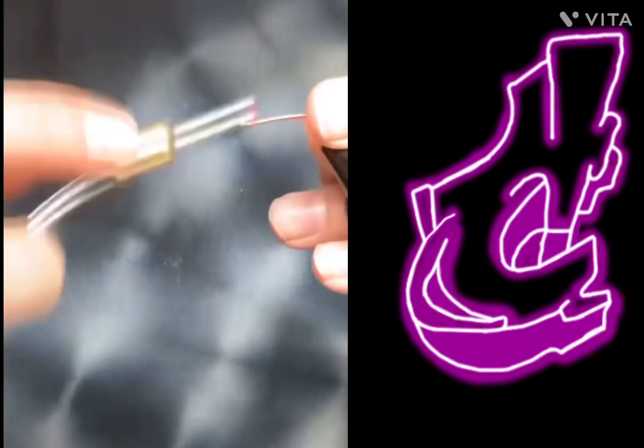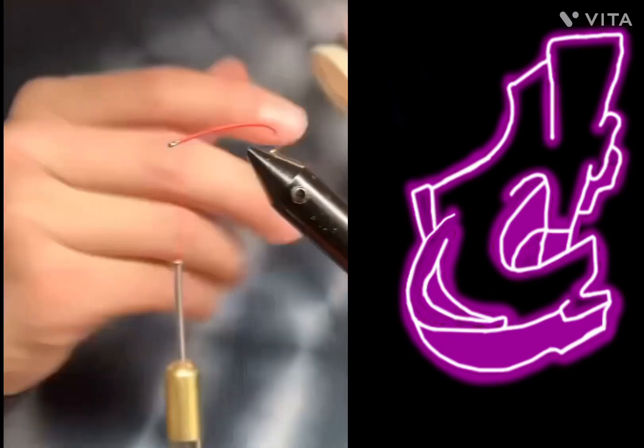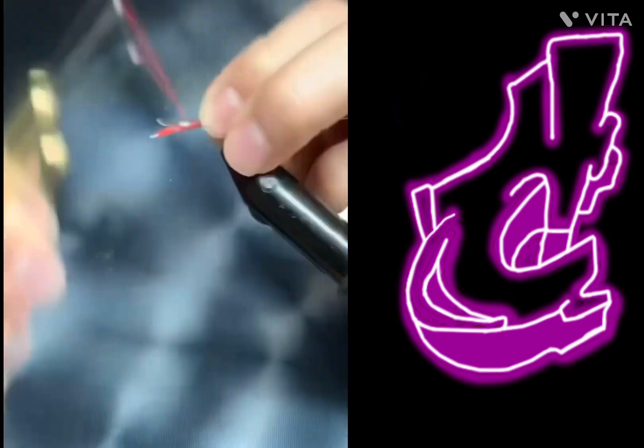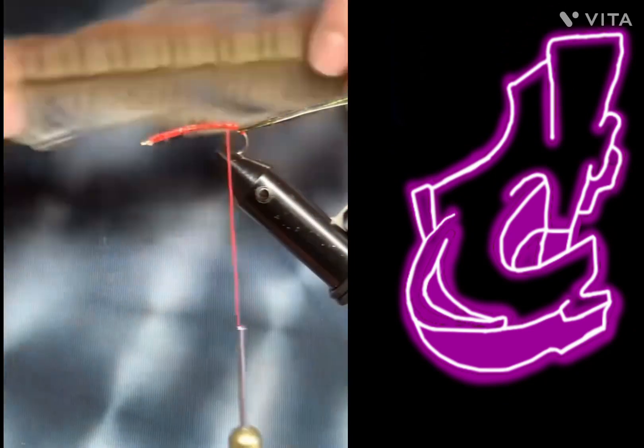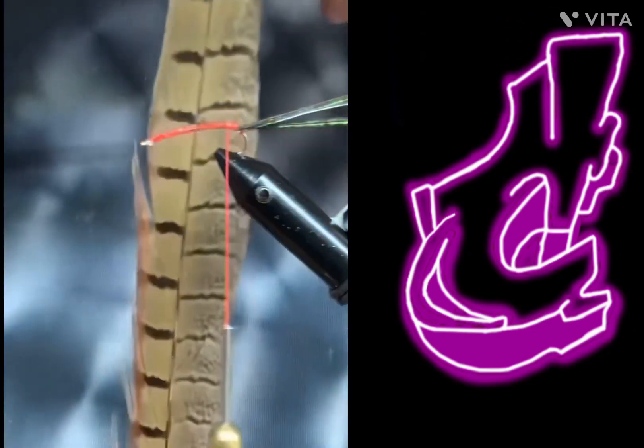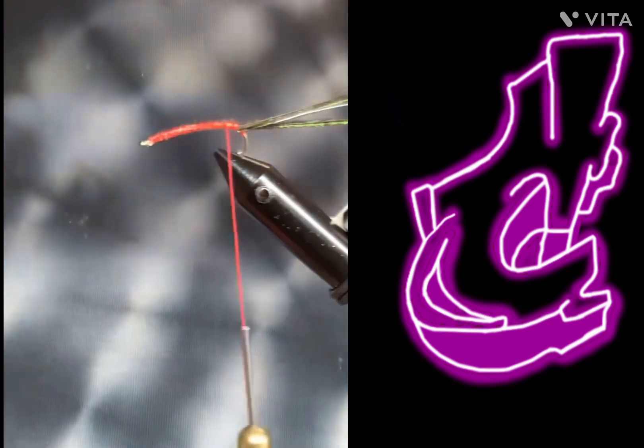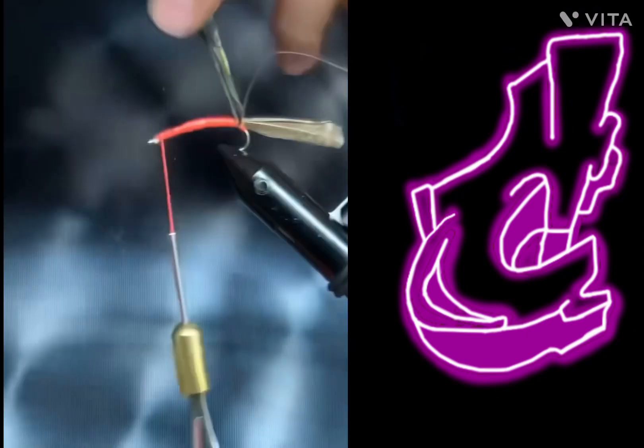We will start out with some orange fluorescent thread and then take some lead wire and attach it to our hook shank. Next, we will take a feather and snip off the end of it and attach it.